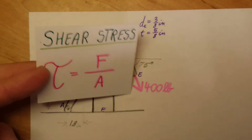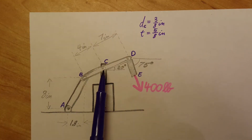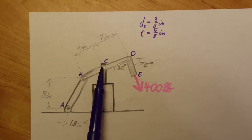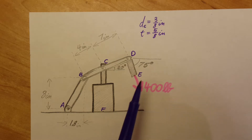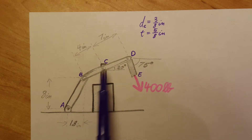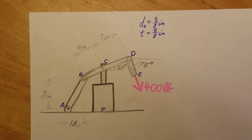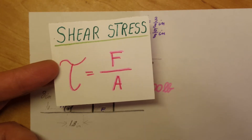The formula for shear stress is force over area, so we need to find the shearing stress at point C. But before we do that, we're going to have to find the force at C — we do not have it yet. The only force we know is the 400 pound load. So we're going to draw a free body diagram for member BCD, do some statics calculations — sum of moments and forces — to calculate force C, and then come back to the shear stress formula.